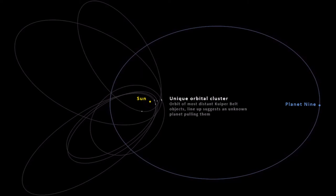If this object is a planet, it has been estimated to have a mass of 5 to 10 times that of Earth, and it may orbit the Sun at around 400 to 800 astronomical units away. While it is most likely that this object is a planet, many other theories have arisen.